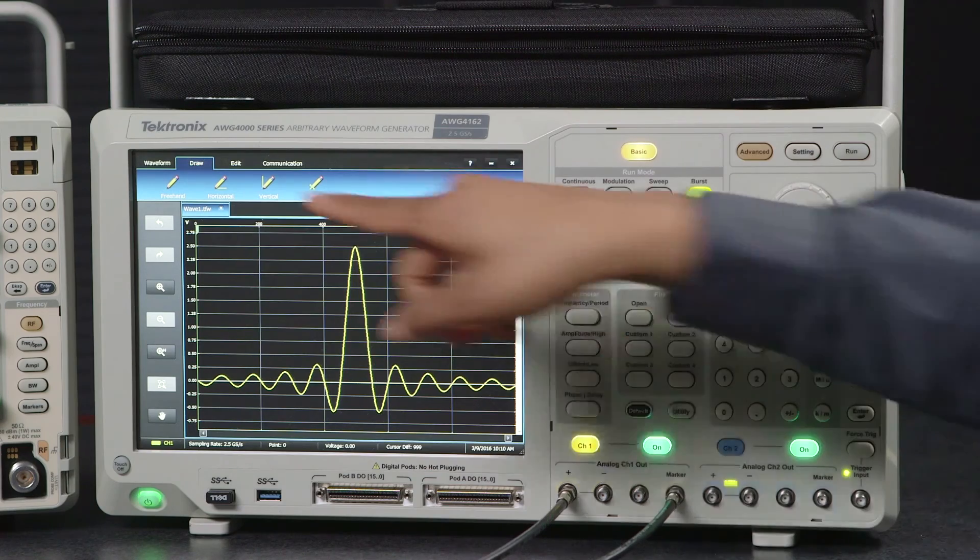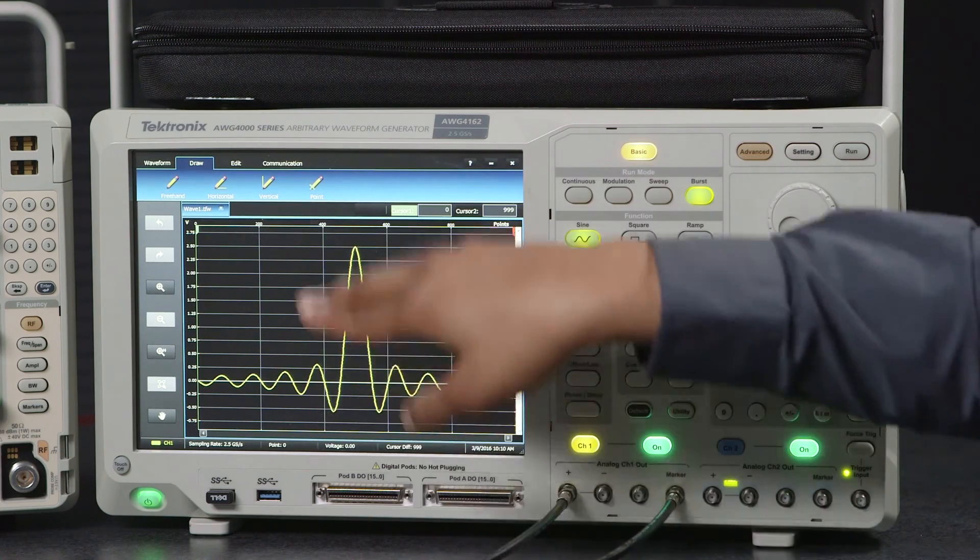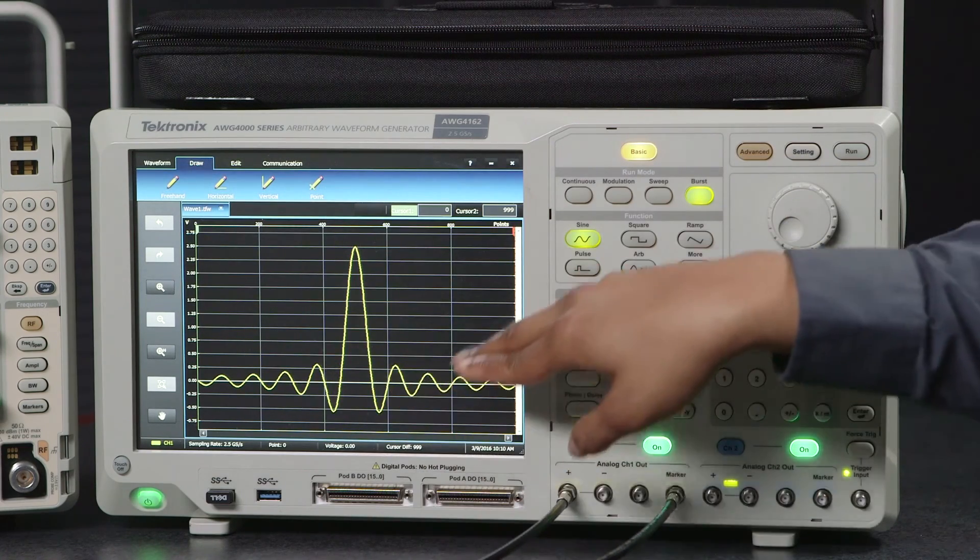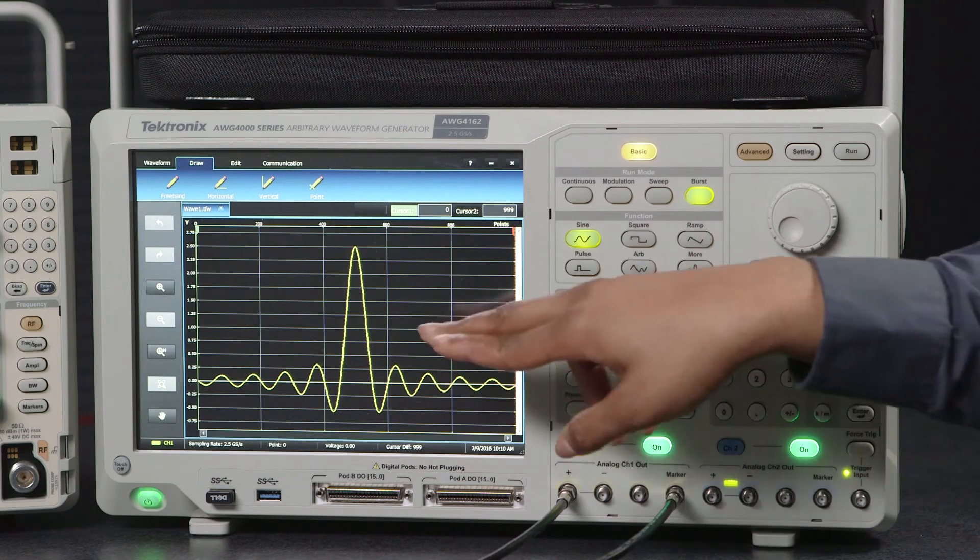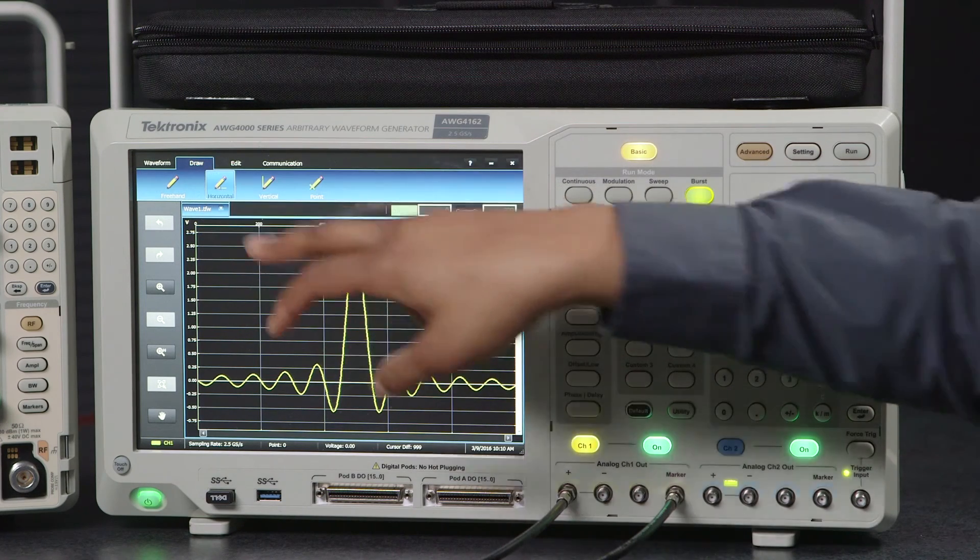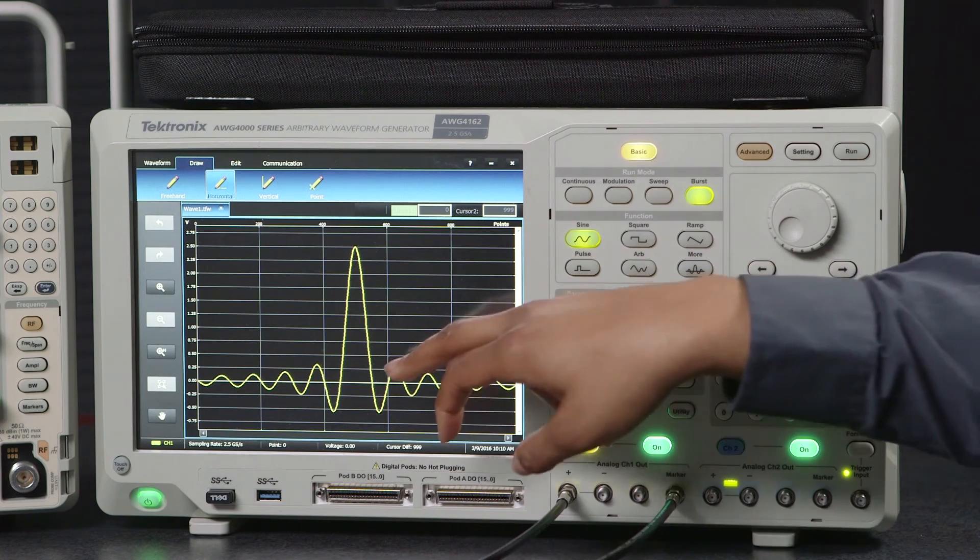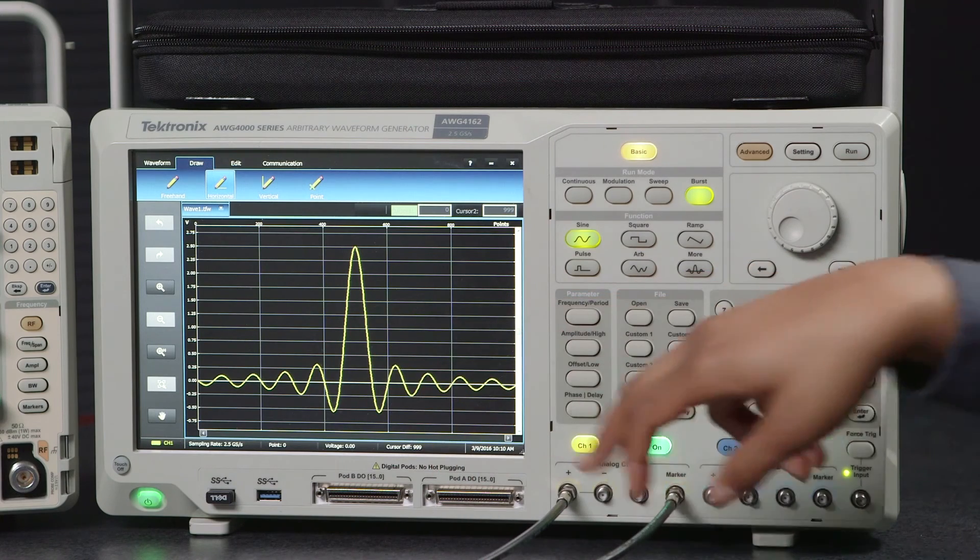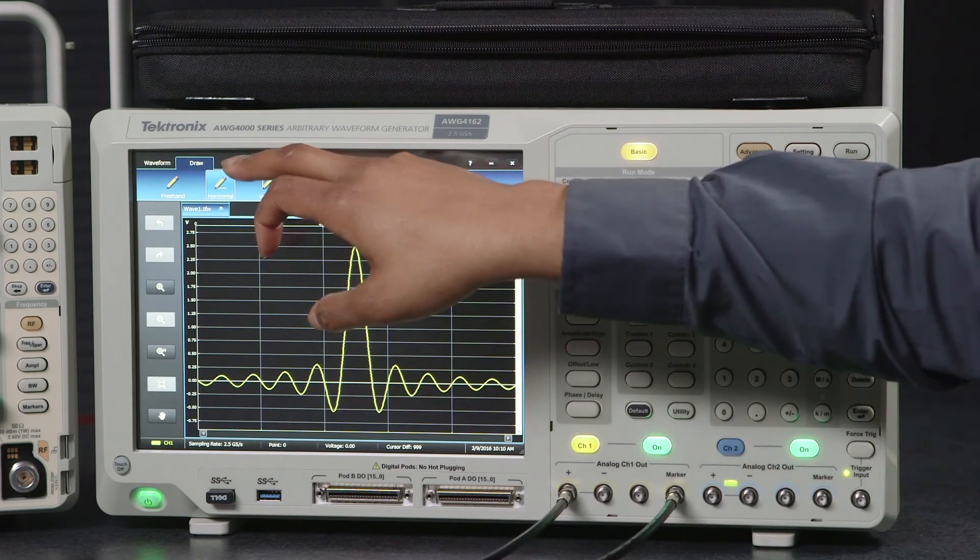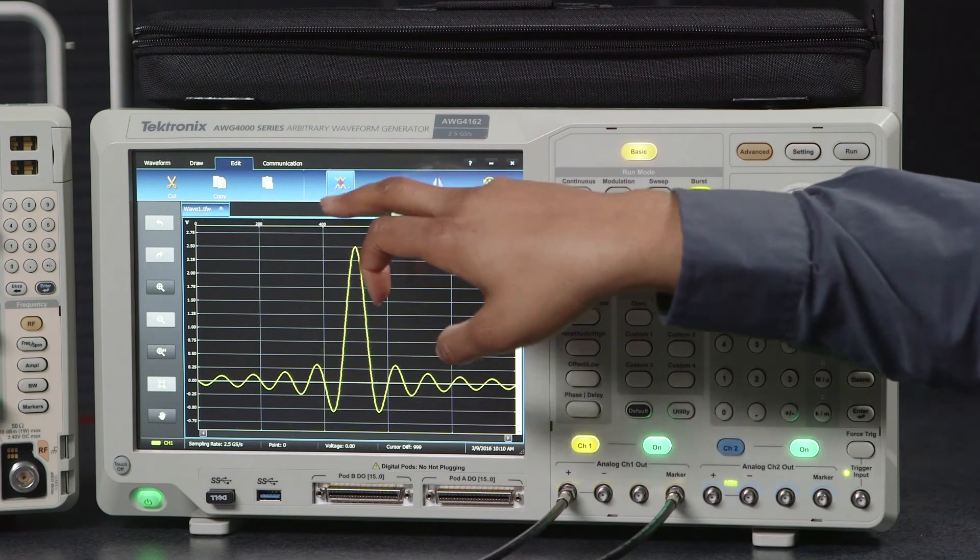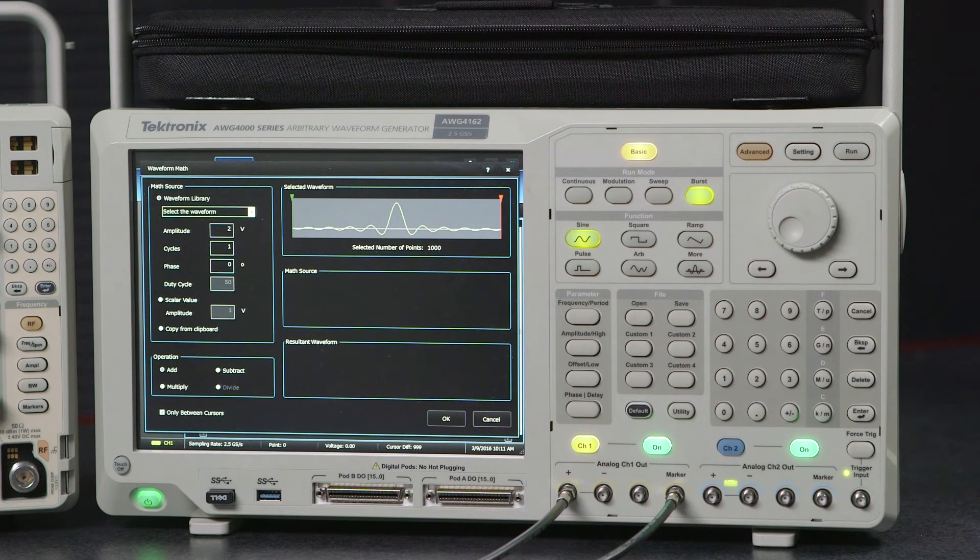We can either use freehand to change the amplitudes of different parts of the signal or actually change specific parts like vertical. We can also edit it using the math function which allows us to pull waveforms from our library and use them to manipulate our selected waveform.